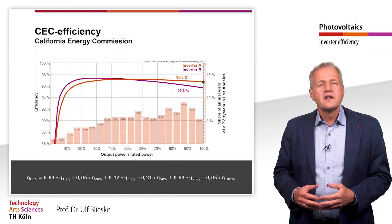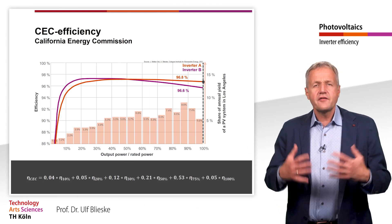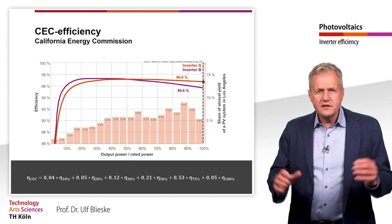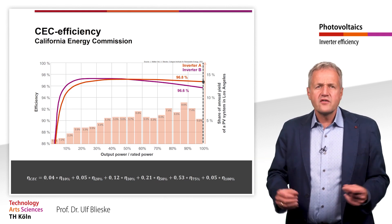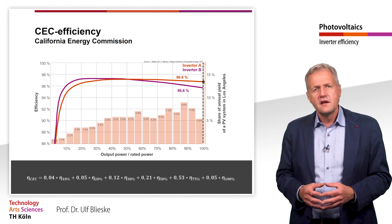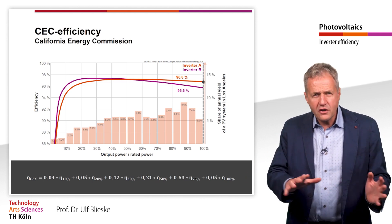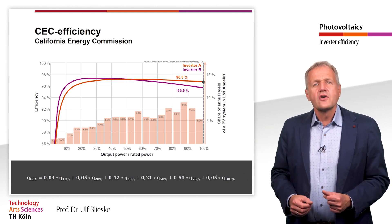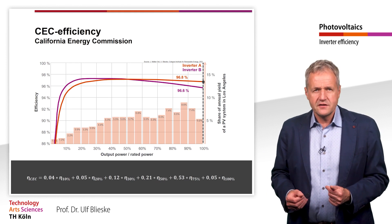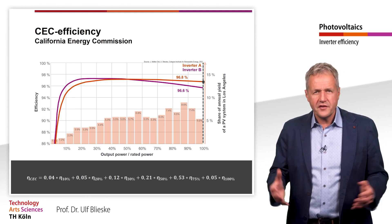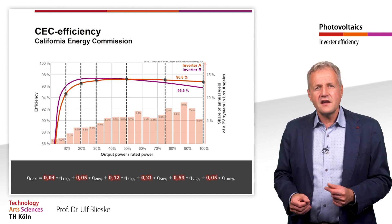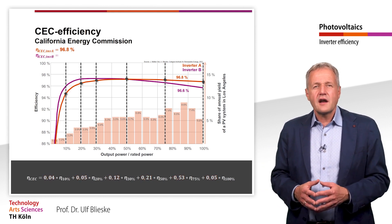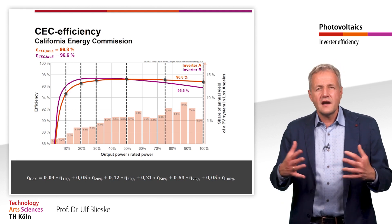For areas with high irradiation, there is another weighted efficiency — the so-called Californian efficiency. Shown here is the energy share of the various outputs in the annual yield for a plant in Los Angeles, a place where higher irradiation can be expected for most of the year. Here the efficiency in the lower partial load range plays only a subordinate role, while higher outputs contribute significantly more to the annual energy yield. This is also reflected in the weighted factors of the Californian efficiency, where the efficiency at 75% of the nominal power receives the highest weighting. For our two inverters, the Californian efficiency values are 96.8% and 96.6%.